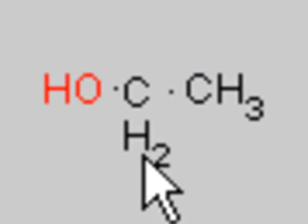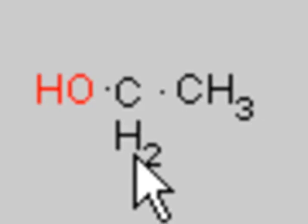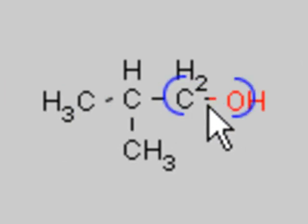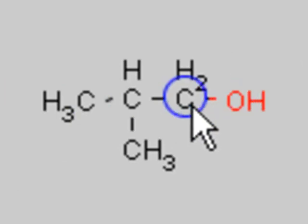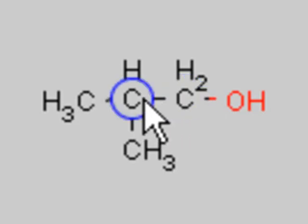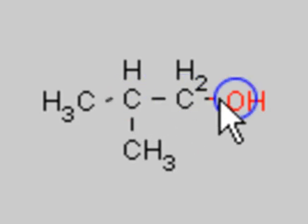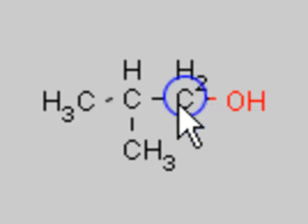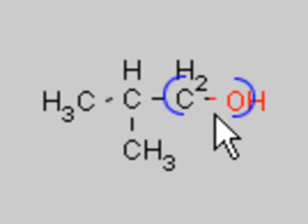Consequently, it has two hydrogens singly bonded to it. This compound here — let's find the carbon that has the OH bonded to it — it has one carbon bonded to the carbon that's bonded to the OH, and two hydrogens bonded to that same carbon. So that's also a primary.